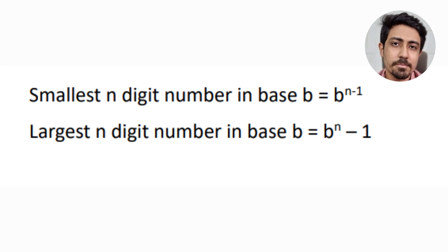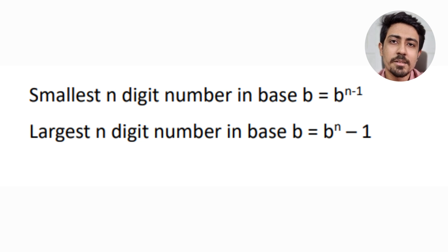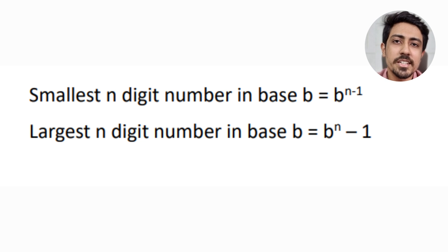The last algebra shortcut is on base systems. The smallest n-digit number in base b is b^(n−1). You can verify this with base 10 — the smallest 3-digit number is 10² = 100. The largest n-digit number in base b is b^n − 1. Try the largest 3-digit number in base 10 to correlate the formula.